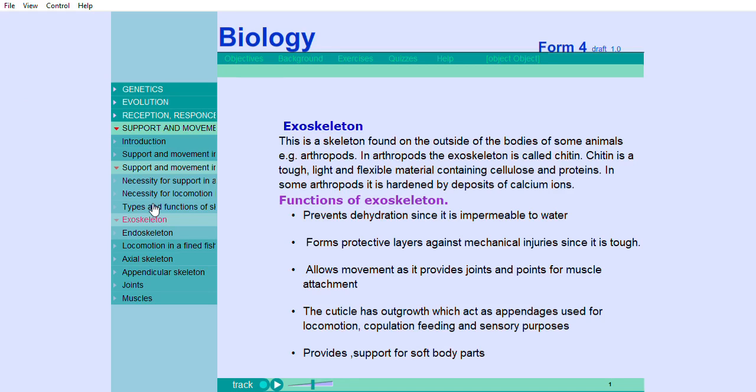Exoskeleton: This is a skeleton found on the outside of the bodies of some animals, for example, arthropods. In arthropods, the exoskeleton is called chitin. Chitin is a tough, light, and flexible material containing cellulose and proteins. In some arthropods, it is hardened by deposits of calcium ions.